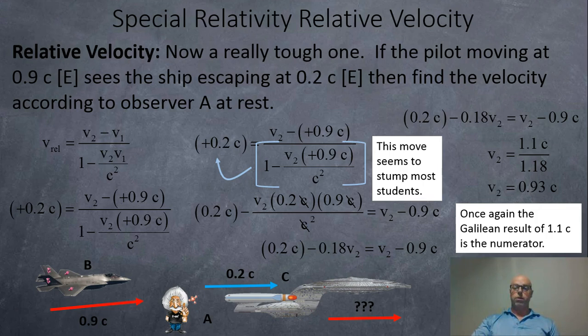We're going to get 0.2 C subtract 0.18 V2 equals V2 minus 0.9 C. Now we just collect like terms. When we bring the 0.18 V2 over, we're going to have 1.18 V2s. When we have the 0.2 C and bring the negative 0.9 over, that's going to become 1.1 C. We get 1.1 C over 1.18 and end up getting 0.93 C. So according to observer A, this plane is moving at 0.9 C, this ship is moving at 0.93 C, but they see a difference of 0.2 C. All a little bit different thanks to relativity.